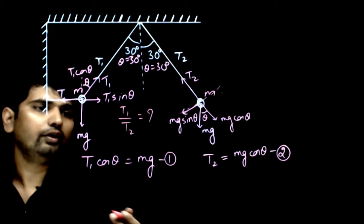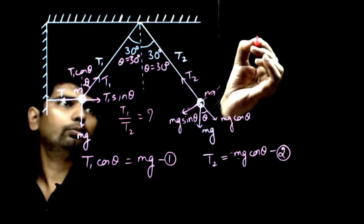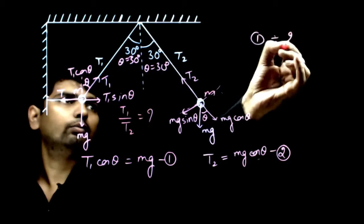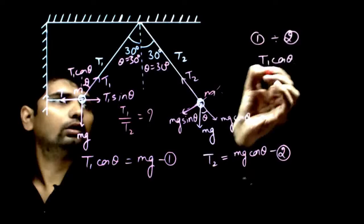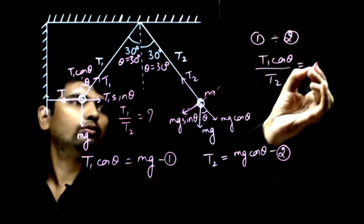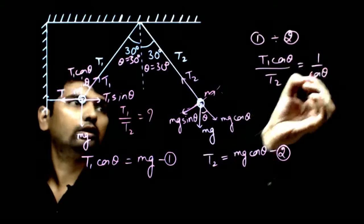Now, if we divide these two equations, equation number 1 divided by equation number 2, I will have T1 cos theta by T2 is equal to 1 by cos theta.